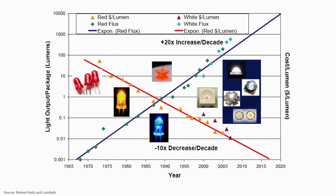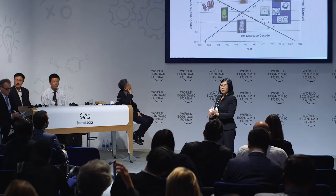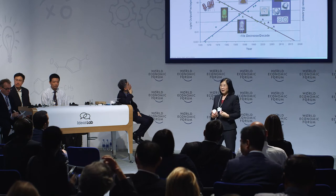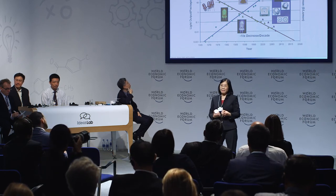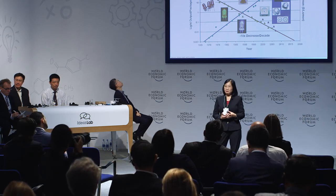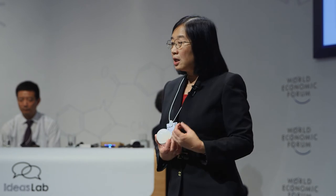The blue curve shows that LED light output has increased exponentially over the past few decades, while the red curve shows that cost has dropped dramatically over the same period. This enables us to use semiconductor materials not just for displays, but as a primary lighting source for illumination.